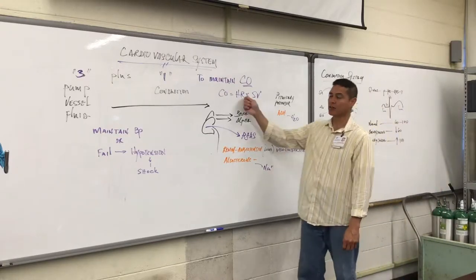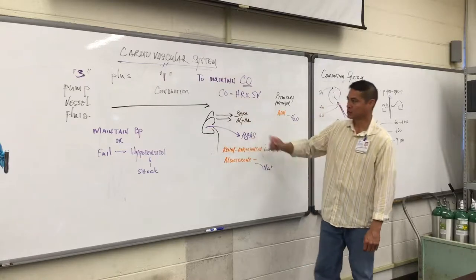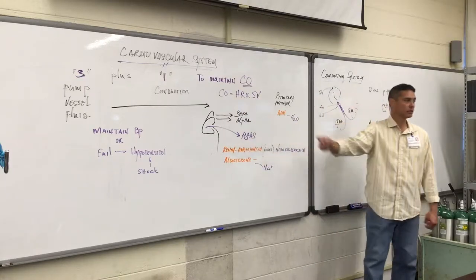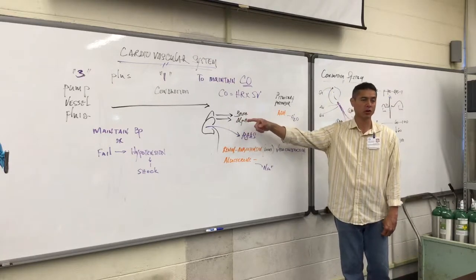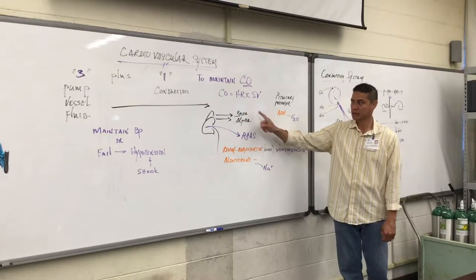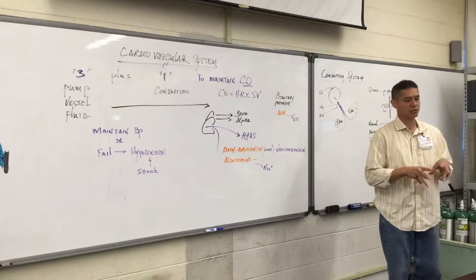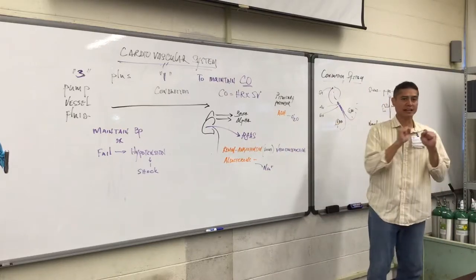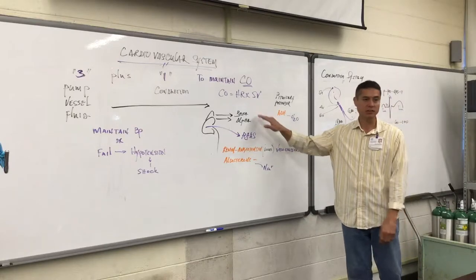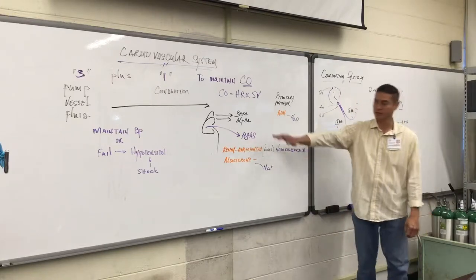Not only does the heart rate increase through the stimulation of beta receptors, we also have the adrenaline and noradrenaline and norepinephrine and these catecholamines. They secrete into the bloodstream these proteins, beta and alpha proteins that attach to these receptor sites that cause increased heart rate as well as vasoconstriction.